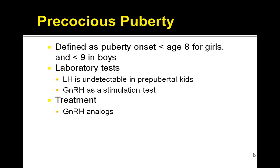Let's talk about Precocious Puberty. This is a condition defined as puberty onset less than 8 years of age for girls and less than 9 years in boys. The onset of secondary sexual characteristics before the age of 8 is a common definition.